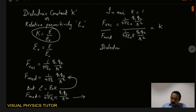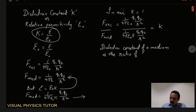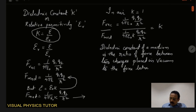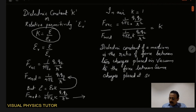Dielectric constant of a medium is the ratio of force between two charges placed in vacuum to the force between the same charges placed at the same distance in the medium.